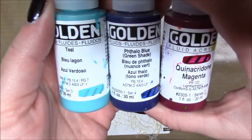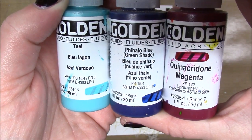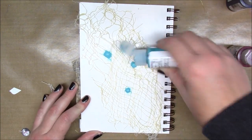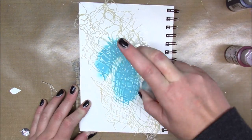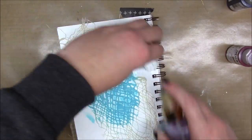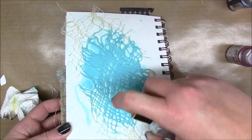So I have golden fluid acrylics in teal, phthalo blue, and quinacridone magenta. I picked these colors because when they blend together they make really nice other colors.